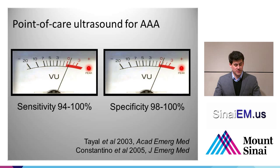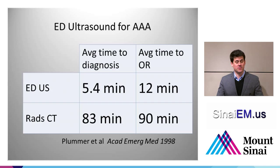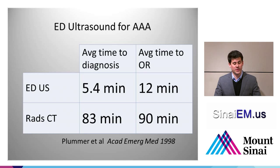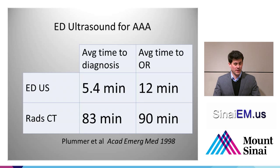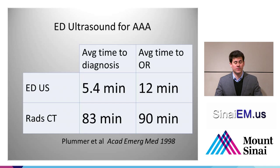Several studies demonstrate sensitivity of 94% to 100% and specificity of 98% to 100% in the emergency medicine literature. One of the first studies, by Dave Plummer in 1998, showed that patients with suspected AAA evaluated by point-of-care ultrasound had an average time to diagnosis of 5.5 minutes and were in the OR in about 12 minutes. Patients who went to radiology for CT scan were diagnosed on average at 83 minutes and taken to the OR in 90 minutes — a huge difference.